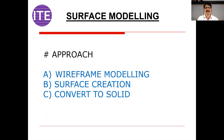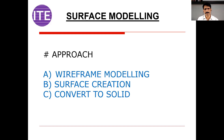Let us take the example of CATIA or any CAD software. The first thing we have to create is a wireframe model. Once you create the wireframe model, the next activity is creating surfaces. And once you create all the surfaces, you have to convert all of them into a solid. There are commands like the sieve command or stitch command. In CATIA, there is a closed surface command.